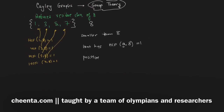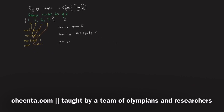Now let's use this reduced residue class to understand the Cayley graph. We will create four points — one for each member of the set — and call them 1, 3, 5, and 7. Next we want to add some edges to this set of points.